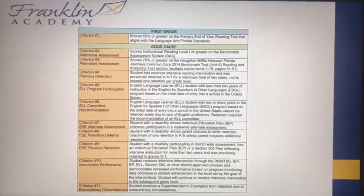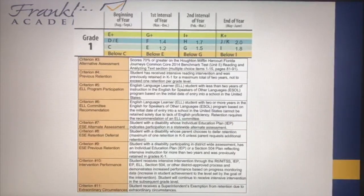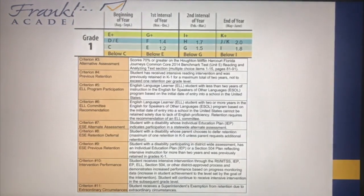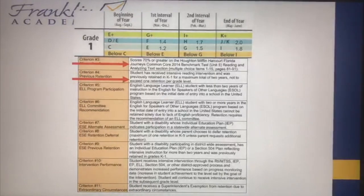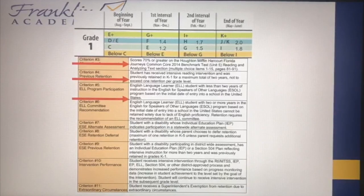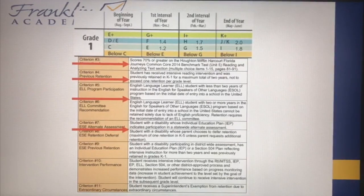For first grade, the primary criteria is the BAS. The student needs to be at letter I, or reading level 1.8, in order to be promoted. If a student hasn't met this criteria, they will take a test from the HMH Journeys and need to score a 70 or above. Also, if a student has been previously retained, we can promote the student. Similarly, if a student is an ESOL student with less than two years in the country, or if a student has an IEP or is an ESE student, we can go ahead and promote that student.